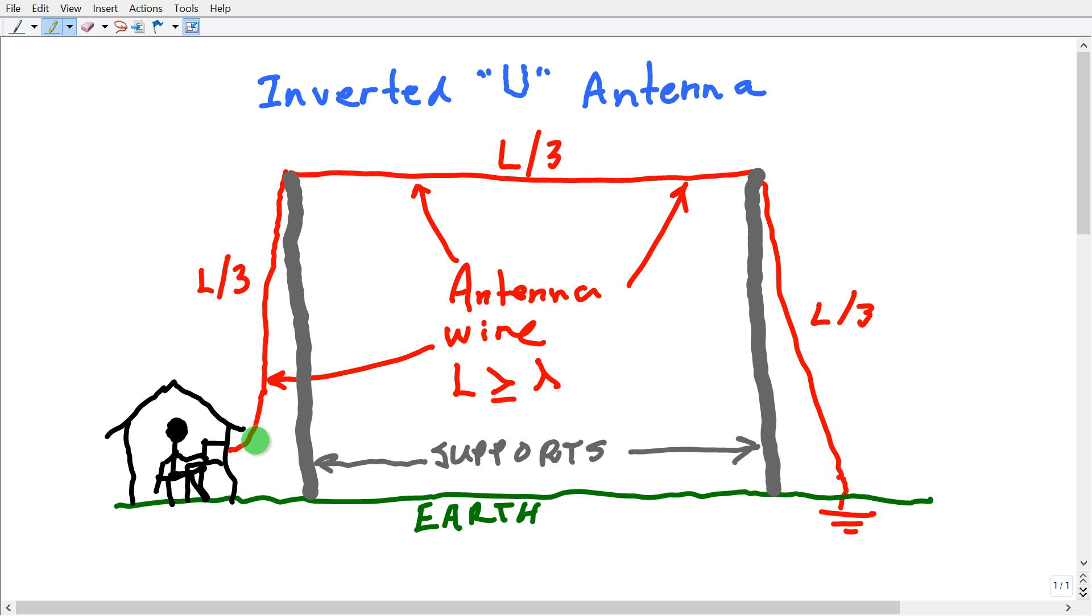Assuming a velocity factor of 95% for the wire. One third of the antenna goes up, one third goes across, and one third of it goes down. So 270 feet, you're talking a 90 foot antenna support here. These are the two supports.